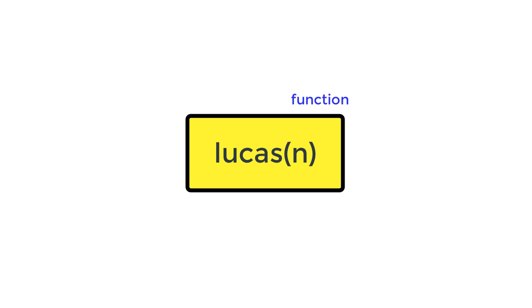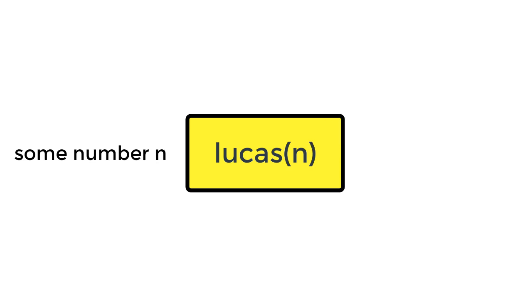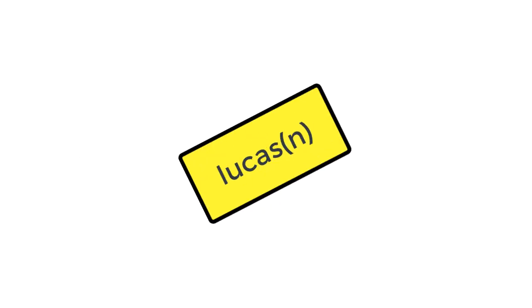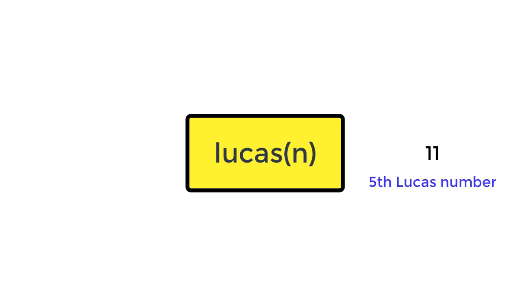Specifically, what I want is a certain function that takes in one parameter, which is the number n, and what we want this function to give out is the nth Lucas number. For example, if I let n equal to five and I call on this function, what I want it to give out is the fifth Lucas number. And so in order to implement this function, I will get my laptop out and we're going to do some actual coding.